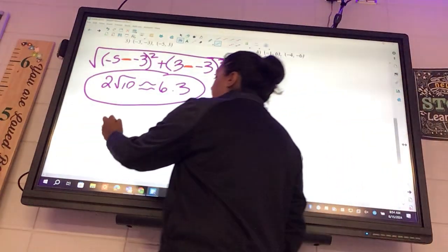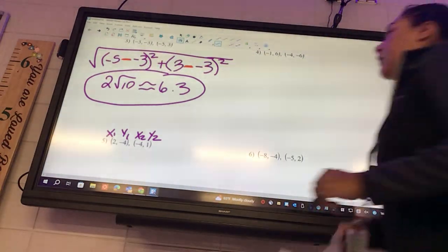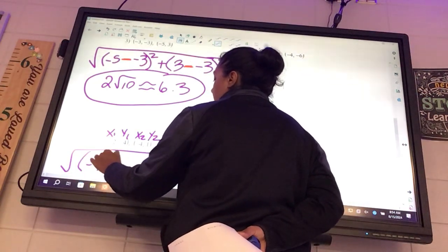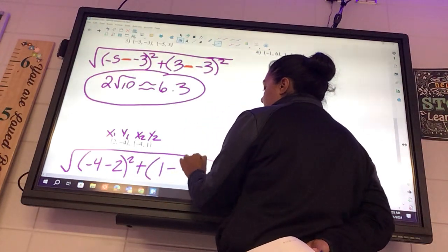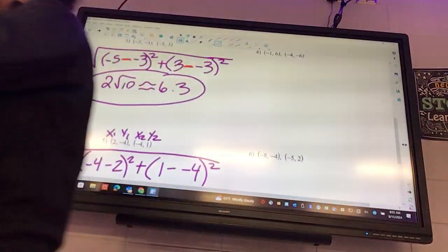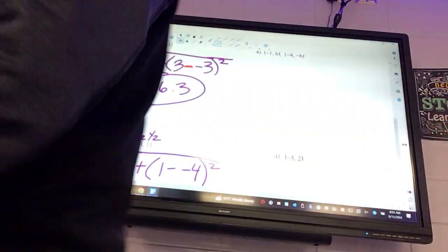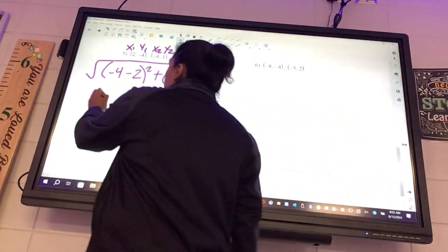Okay, number 5, we're going to say X1, Y1, X2, Y2. So it's going to look like square root, parentheses, negative 4 minus 2 squared, plus parentheses, 1 minus negative 4 squared.